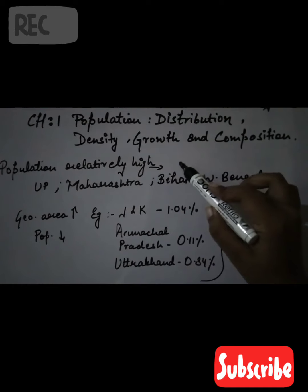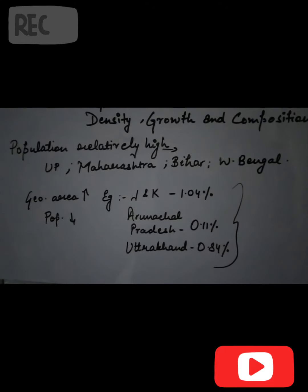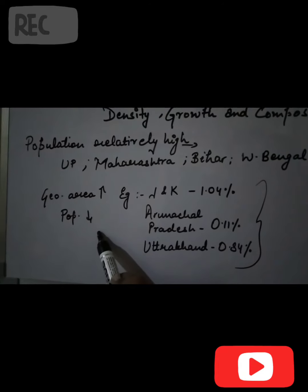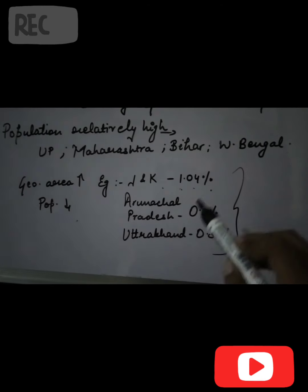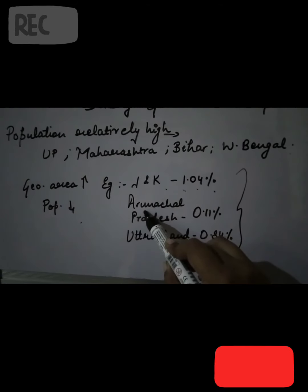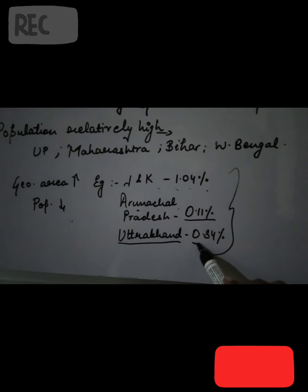There are states where the geographical area is very high but population is very low. For example, Jammu and Kashmir accounts for only 1.04% of population. Arunachal Pradesh has 0.11%, and Uttarakhand has 0.84% population. The geographical area is very high but the population is very low in these states.